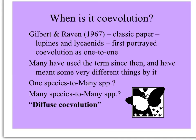The term co-evolution was first used in the 1960s by Larry Gilbert and Peter Raven in a classic paper where they talked about lupins and lysinids as one example of butterfly host-plant interaction, and then another big paper in which they looked at specialization in many different groups of insects and plants. Their definition first portrayed co-evolution as one species to one species. Since that time, there have been many different uses of the term — sometimes one species to many species, for example hummingbirds to their plants; or many species to many species. These two later uses have been called by some scientists diffuse co-evolution.